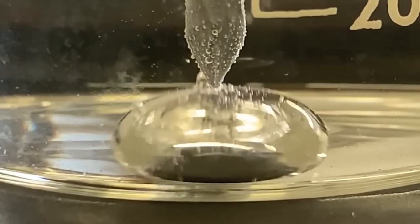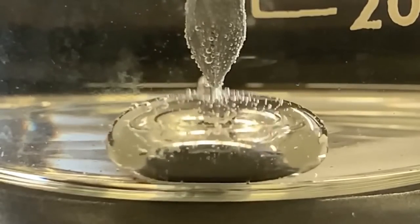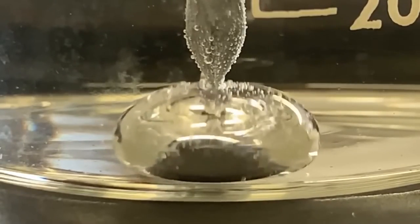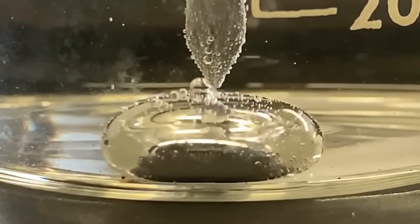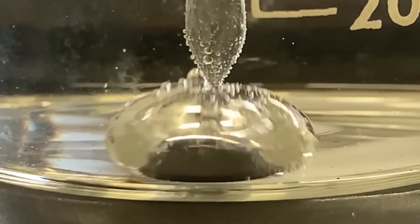So by positioning the metal at just the right height above the gallinstan, the droplet oscillates between compressed and expanded states and ends up looking like a pulsating blob or a beating heart.